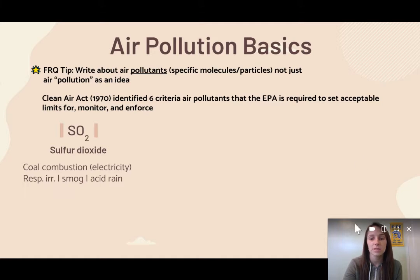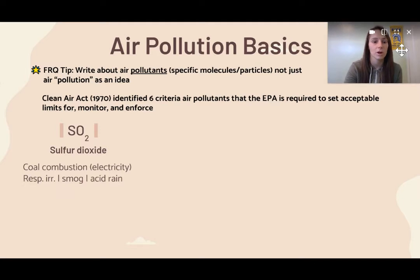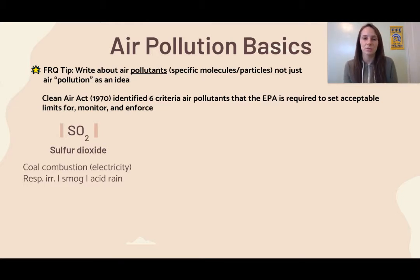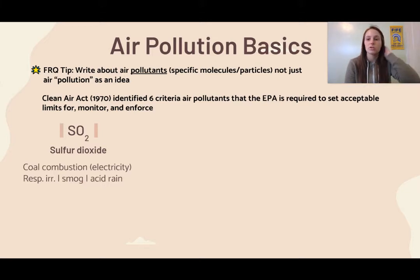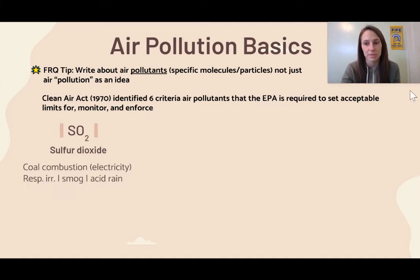The first one is sulfur dioxide, which occurs from coal combustion — coal combustion occurs when we make electricity. Some problems it can cause are respiratory irritation, it creates smog, and it can create acid rain. When we say acid rain, be aware that any precipitation is included: acid snow, acid fog, and acid rain. I'll use acid rain as shorthand, but it encapsulates all acid precipitation.